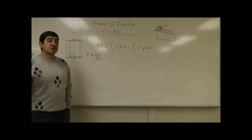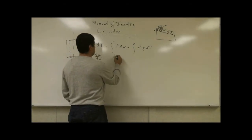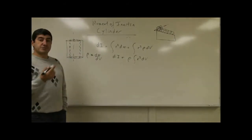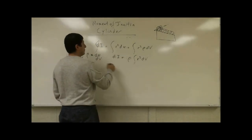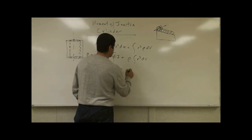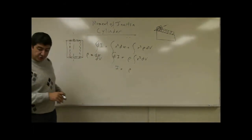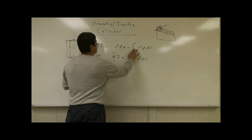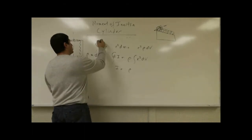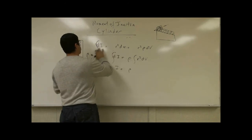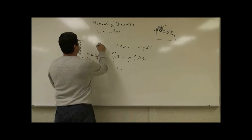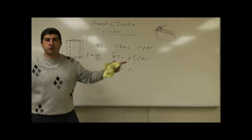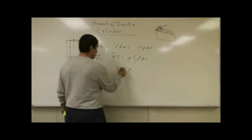If the cylinder is uniform density, rho comes out of the integral, giving I = rho·∫R²·dV. The volume element dV for a cylindrical shell of radius r, thickness dr, and length l is dV = 2πr·dr·l, where 2πr is the circumference and dr is the thickness. So dI = R²·rho·dV, and integrating over all shells by summing up all those moments gives the total moment of inertia.